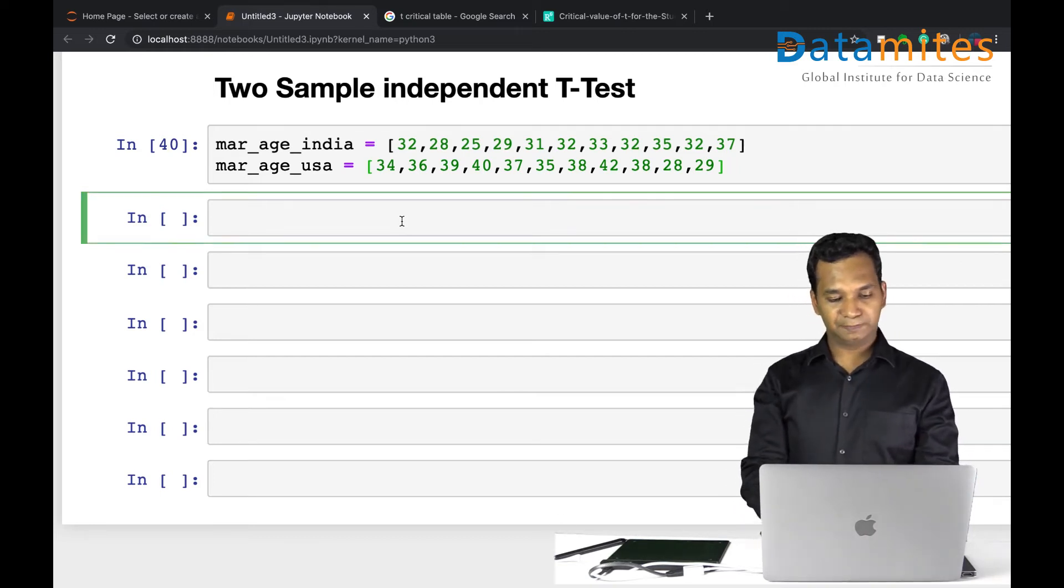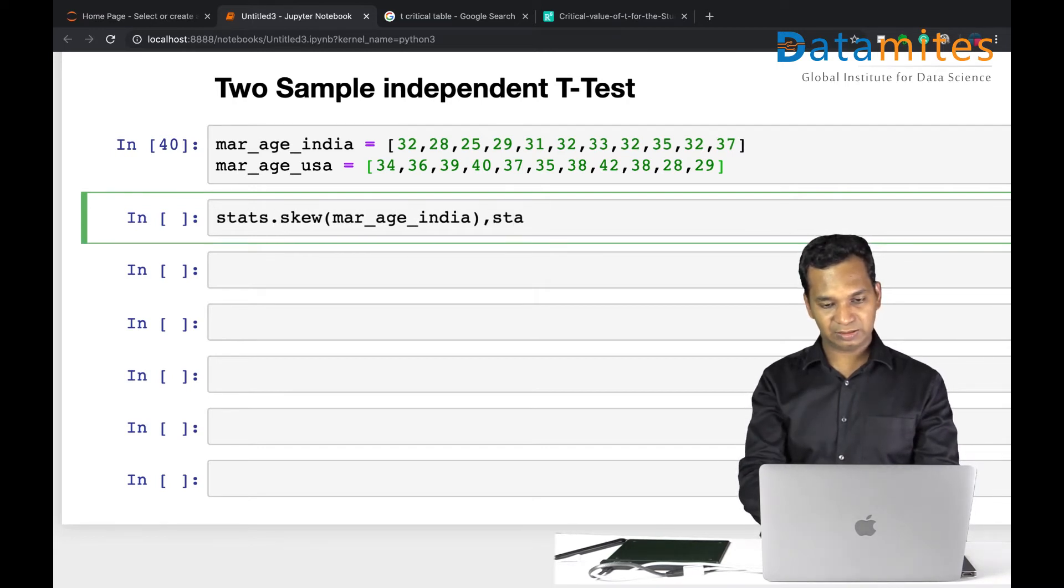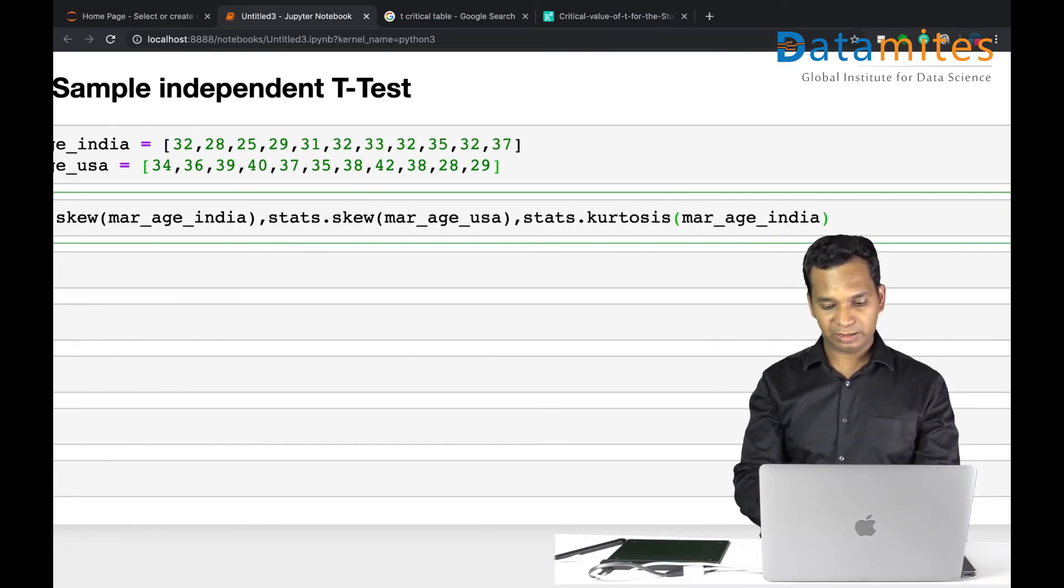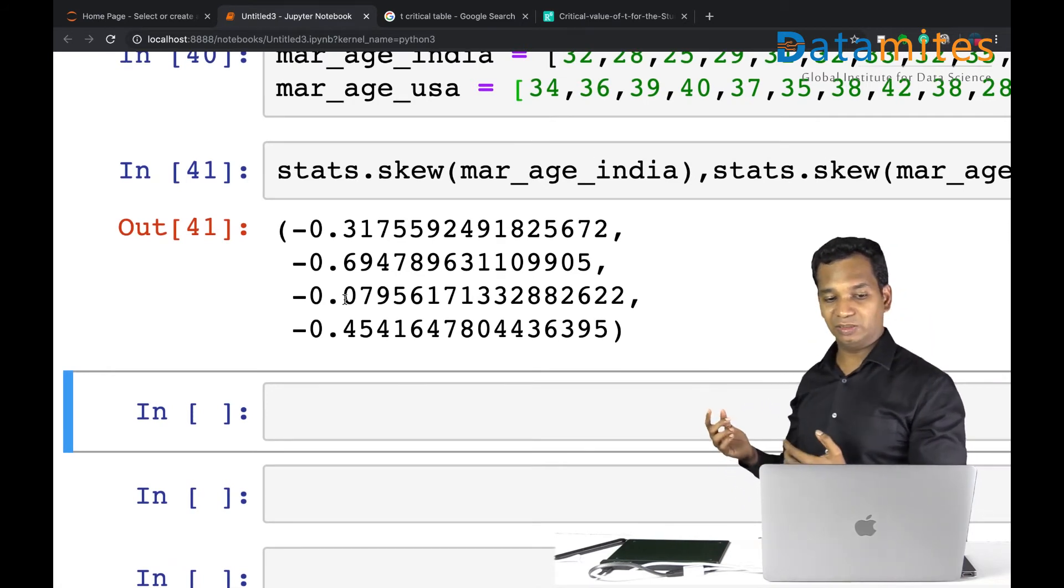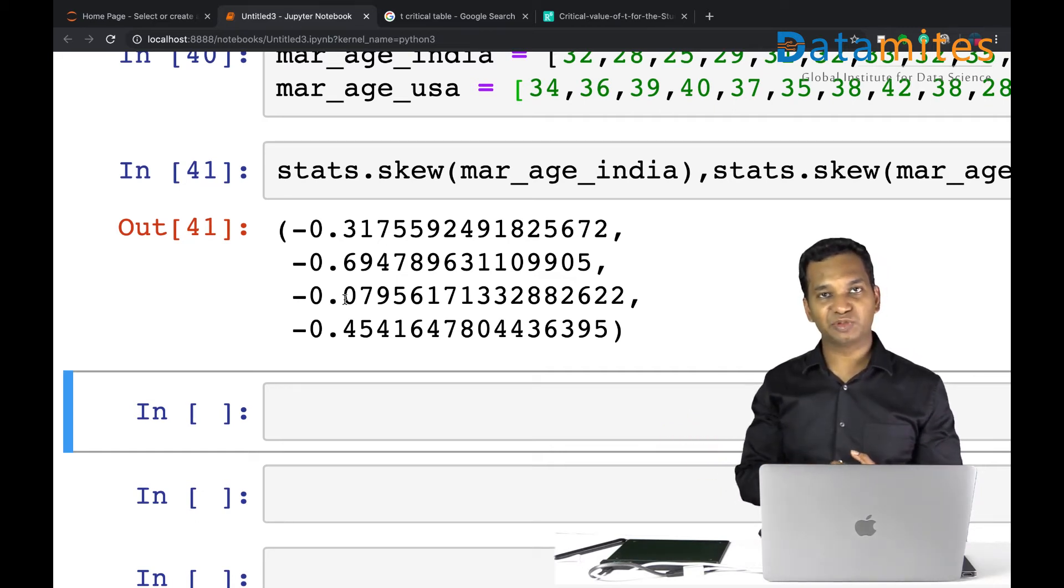Again, even for this you need to test skewness and kurtosis. So I'm going to roughly say skewness for marriage age in India and kurtosis. I can use a print statement, it just takes a lot of space. I'm going to simply say stats.skew for marriage age of USA and again stats.kurtosis for marriage age in India and then stats.kurtosis for marriage age USA. Run it, you get four different values in a tuple. So I see all of the values are between minus one and zero, which is all okay.